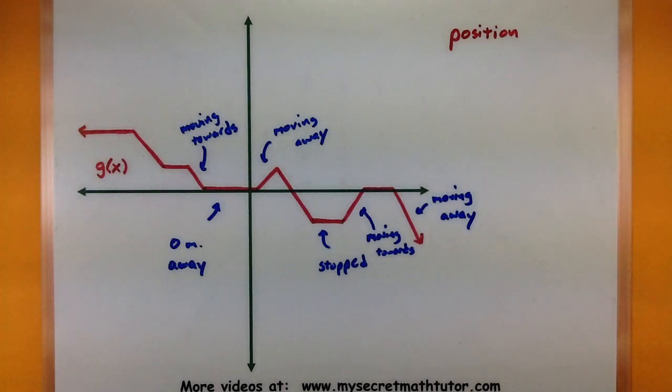So keep in mind that our position function is always giving us our distance from zero. We know where we're stopped, where it's completely level. And we can really interpret the slopes as if we're going away or towards. And we know how quick we're doing that by how steep these slopes are.